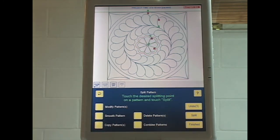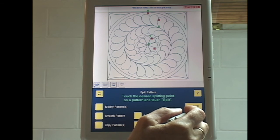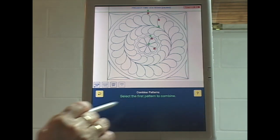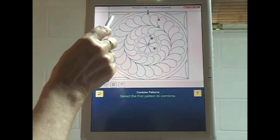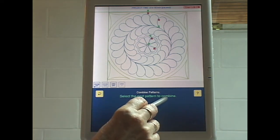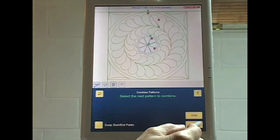So now those patterns are all separate. They're no longer combined. So now I have to combine them again so that it keeps them all together and makes it into one pattern. So I'm going to hit combine patterns. Select the first pattern to combine and I'm going to choose the outside one because I discovered that was like doing stitch in the ditch. It really stabilizes the block. So that's the first one I want to do. Continue. Select the next pattern to combine. I'm going to choose the feathered wreath. Continue.